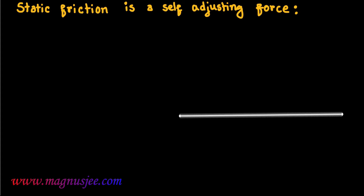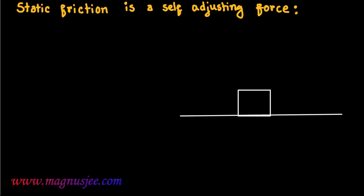Static friction is a self-adjusting friction. In the diagram, a body is placed on a rough surface, with east and west directions marked.